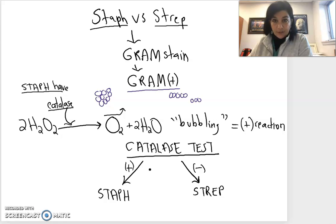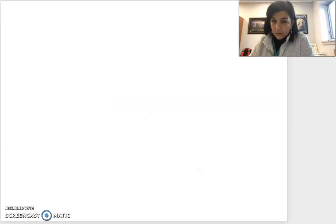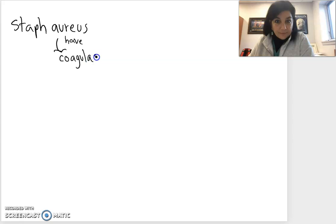Both of these tests that I'm going to talk about are to differentiate Staph aureus from Staph epidermidis. What we know is that Staph aureus, this strain of staph, has an enzyme that Staph epidermidis doesn't have, and it's called coagulase. Coagulase catalyzes an enzymatic reaction that turns plasma into little clumps, coagulating clumps.